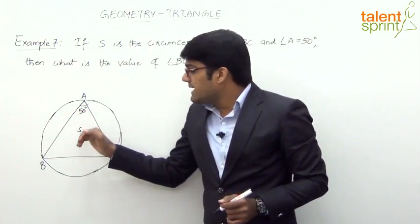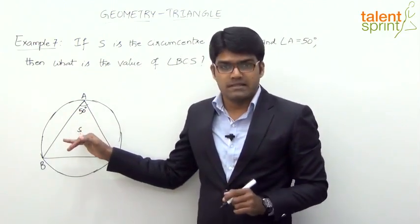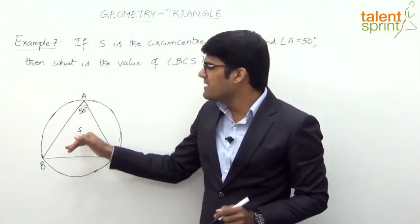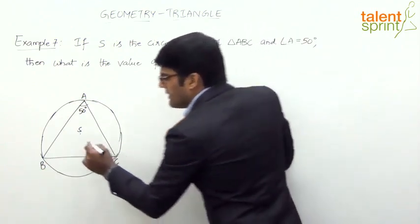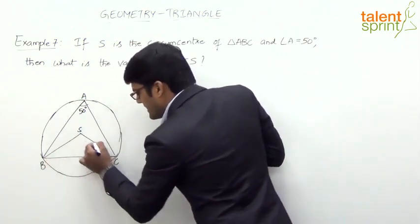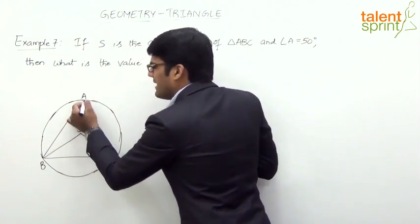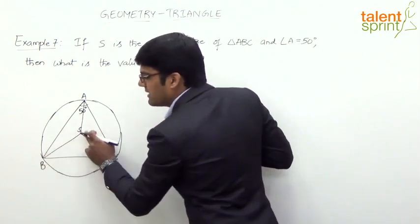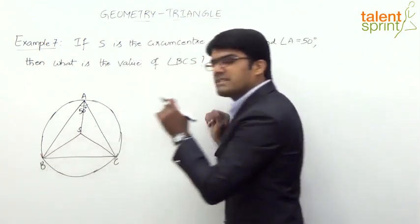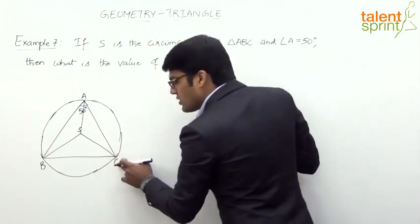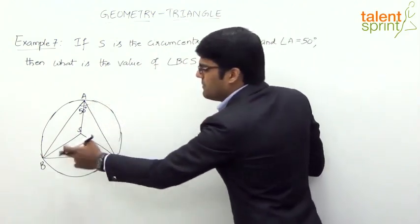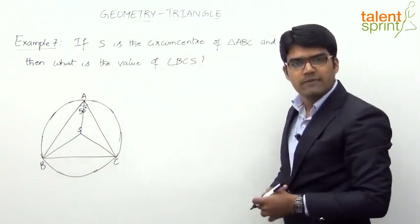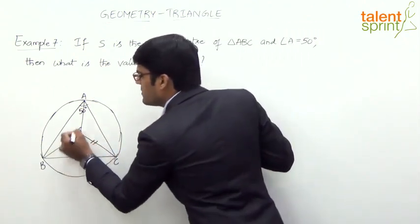The circumcenter must be equidistant from all three vertices — only then can the circle pass through all three. So circumcenter S is equidistant from A, B, and C, meaning SB = SC = SA. These three distances are nothing but the radius of the circle, since B, C, and A are all points on the circle. Hence SB = SC = SA.